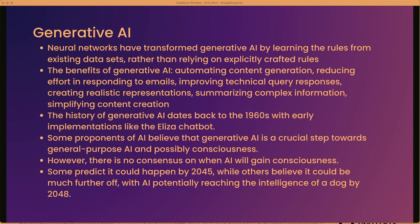The benefits of generative AI include automating content generation, reducing effort in responding to emails, improving technical query responses, creating realistic representations, summarizing complex information, and simplifying content creation. When I was working on this talk, I found hundreds of relevant articles, so I used an AI summarizer for all those links and pasted the summaries into my outline — rather than reading and summarizing hundreds of articles myself. Which was really handy.